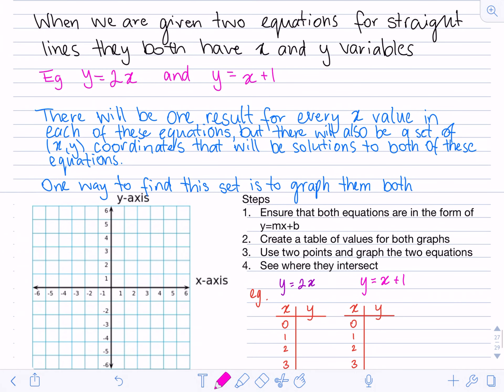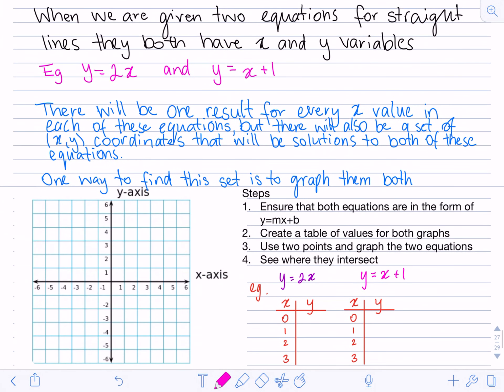So let's go through some theory, just some basic understanding of how we're going to complete these questions. When we are given two equations for straight lines, they both have x and y variables. For example, I'm given two equations here, y equals 2x and y equals x plus 1.